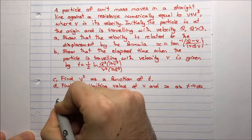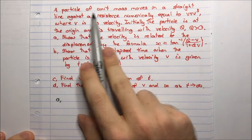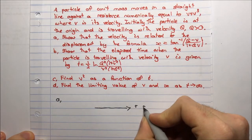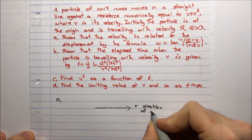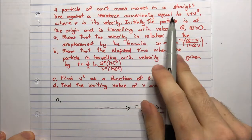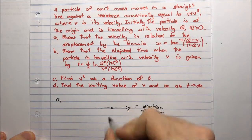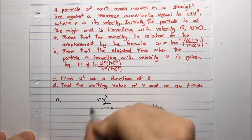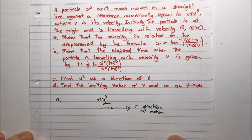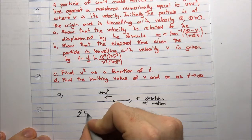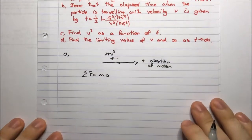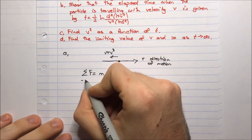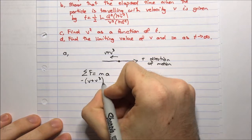For part A, let's draw a diagram. A particle moves in a straight line — define this as the positive direction of motion. It is going against a resistance numerically equal to v plus v cubed, so there is a resistance force in the opposite direction to the direction of motion, equal to v plus v cubed.